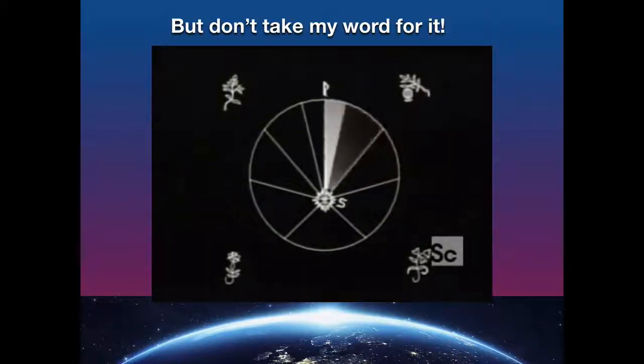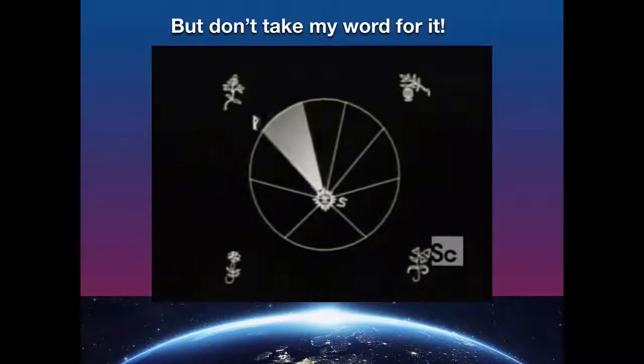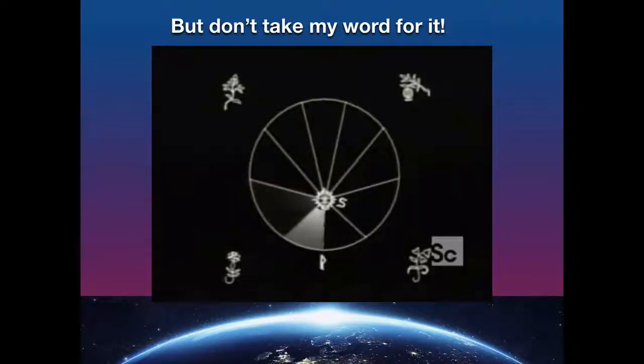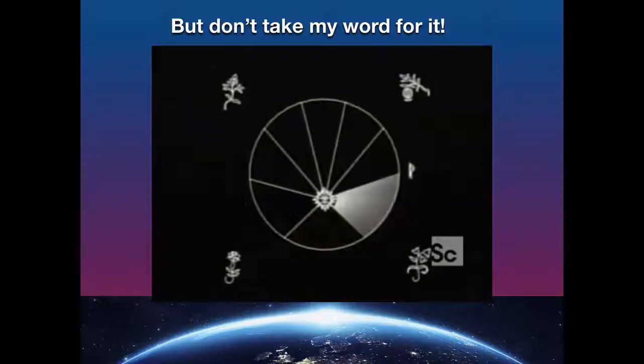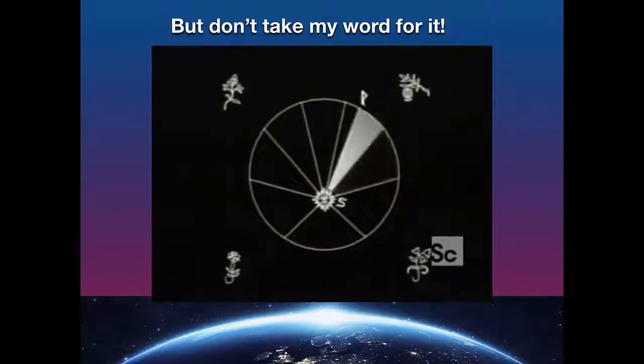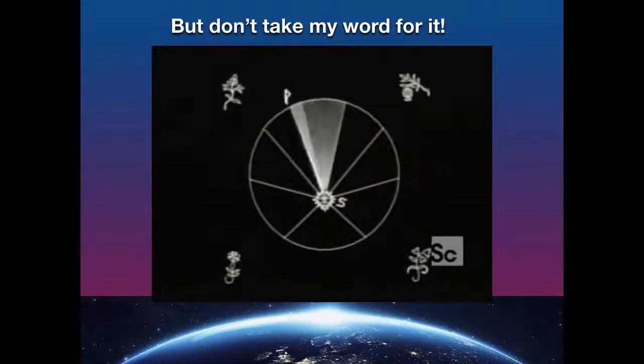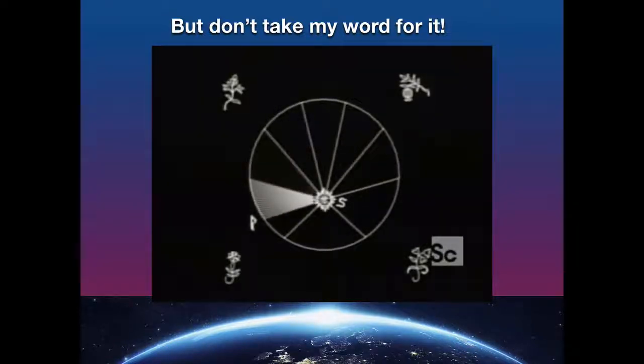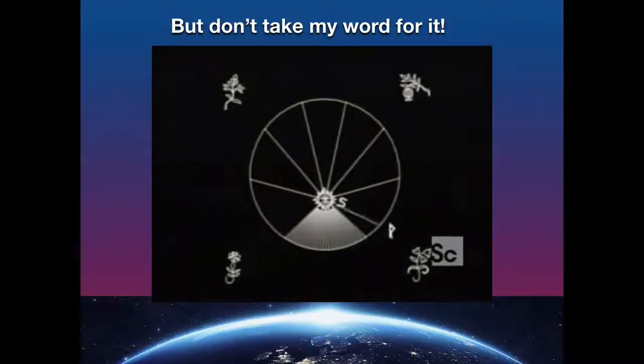Although the shapes of these wedges are different, Kepler found that their areas are exactly the same. This provided a precise mathematical description of how a planet changes its speed in relation to its distance from the sun.